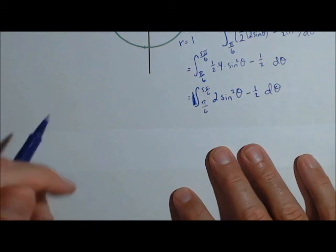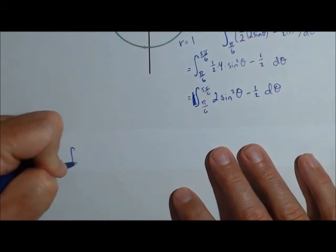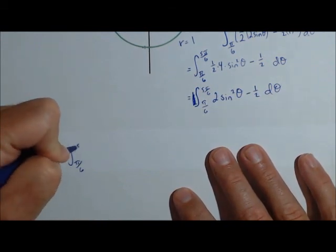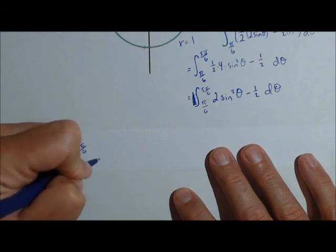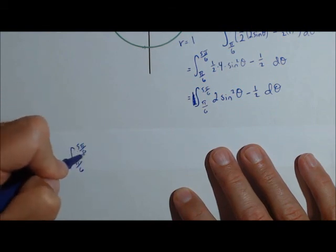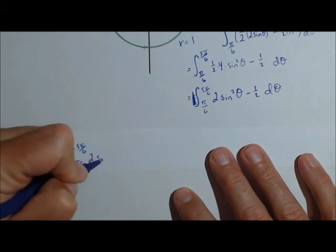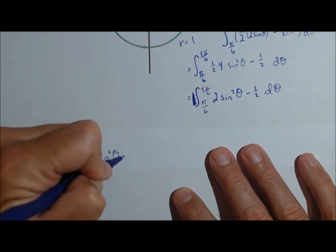So this can be split into two separate integrals. So we've got the integral from pi over 6 to 5 pi over 6 of 2 sine squared theta d theta.